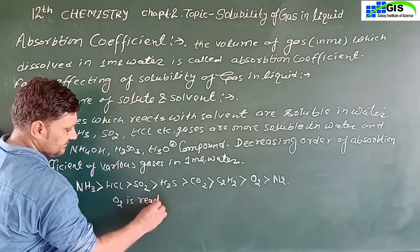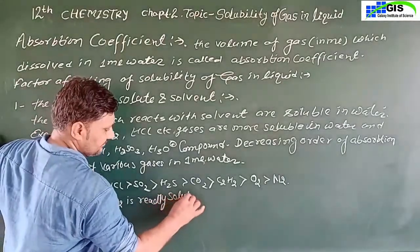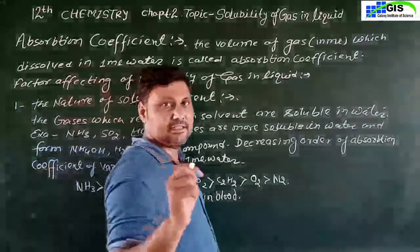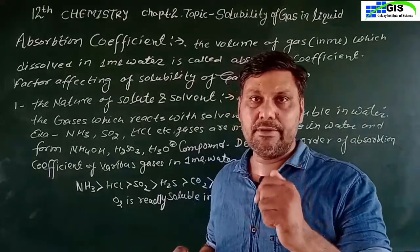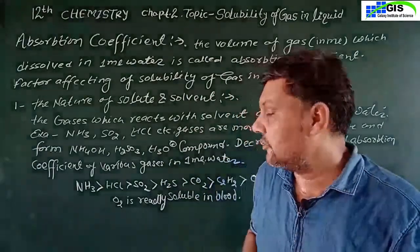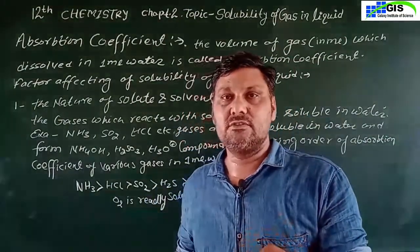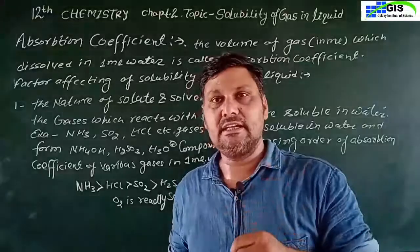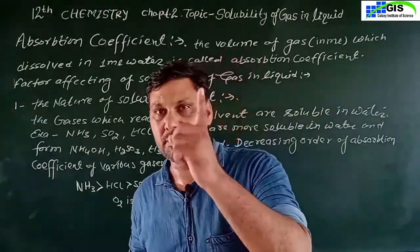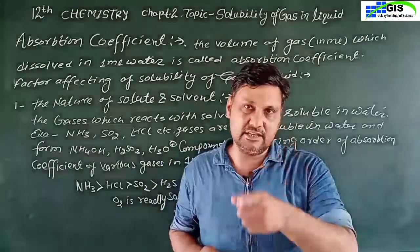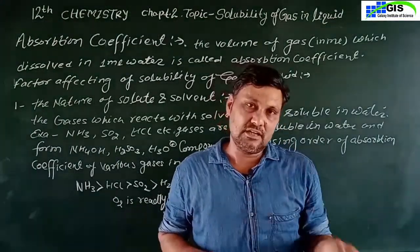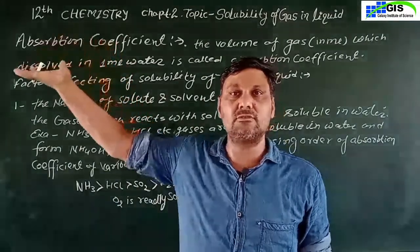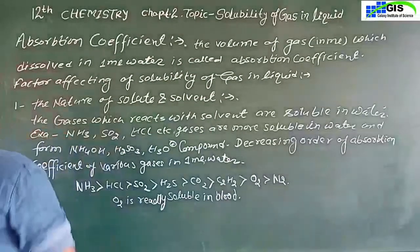Oxygen gas is readily soluble in blood. Hemoglobin in RBCs carries oxygen through the body. Carbon dioxide is carried back by blood plasma, which contains 92% water, and CO2 dissolves in that water and reaches the lungs to be excreted.